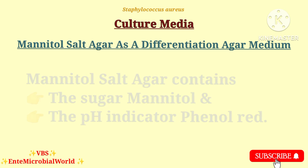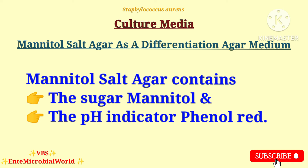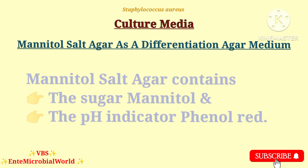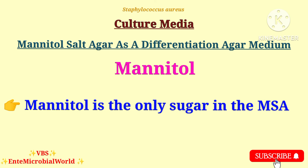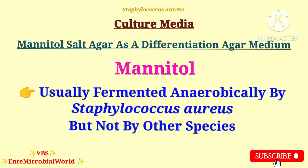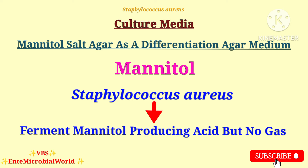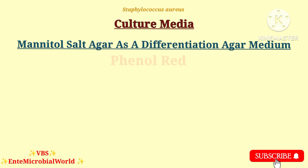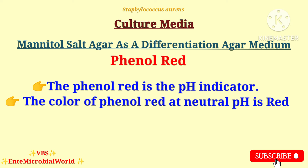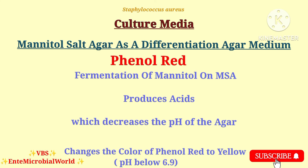As a differential medium, mannitol salt agar contains the sugar mannitol and the pH indicator phenol red. Mannitol is the only sugar in the mannitol salt agar and is usually fermented anaerobically by Staphylococcus aureus but not by other species. Staphylococcus aureus ferments mannitol producing acid but no gas. Fermentation of mannitol produces acids which decreases the pH of the agar, changing the color of phenol red to yellow — at pH levels below 6.9 the medium turns yellow.